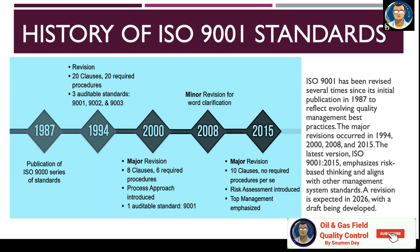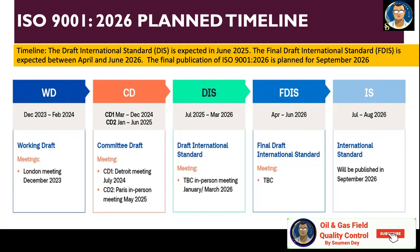ISO 9001:2026 planned timeline: the final publication is planned for September 2026. WD — the working draft — was in the London meeting in December 2023, and the working draft ran between all reviewers from 2023 to February 2024. Then CD — the committee draft — ran from March to December 2024, and CD2 ran from January to June 2025.